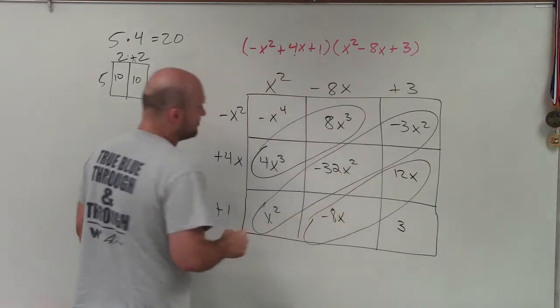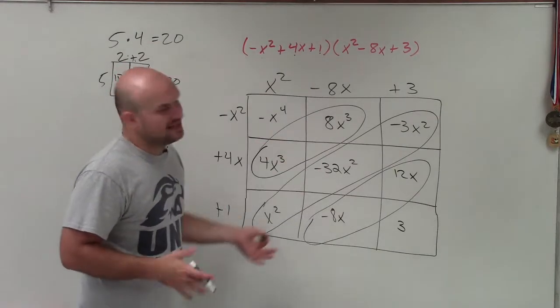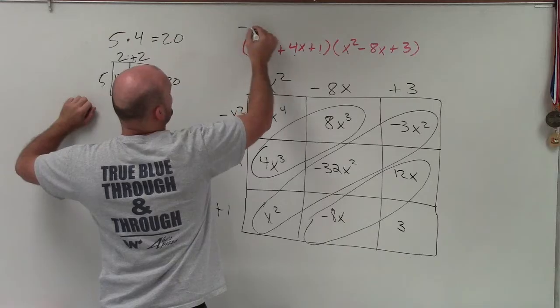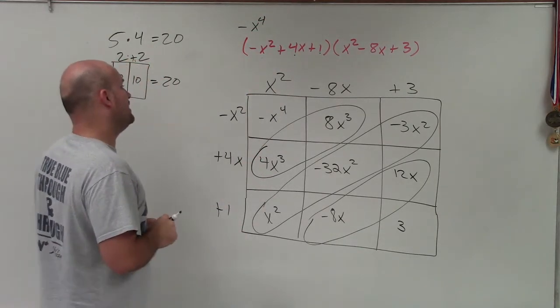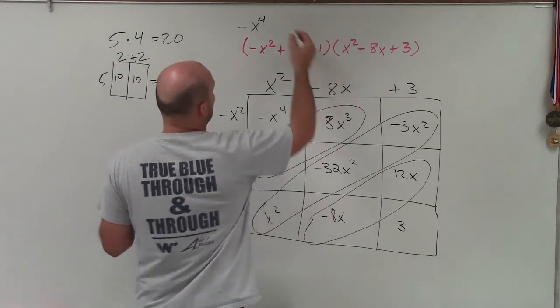So now when I want to be able to, when determining my final answer, all I simply am doing is just going to be combining these diagonals. Now there's nothing to combine with negative x to the fourth, so I'll write that out there. So negative x to the fourth. Here I have 4x cubed and positive 8x cubed, which is going to leave me with 12x cubed.